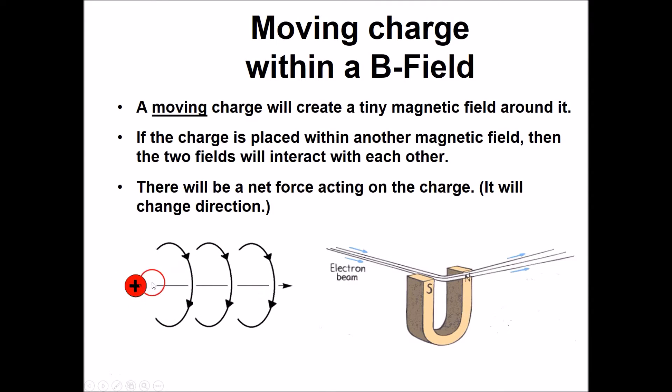It's this moving motion of charges within materials that produces the magnetic domains we talked about earlier. Even in a permanent magnet, which looks permanent, the motion of these charges is what generates these little magnetic fields.